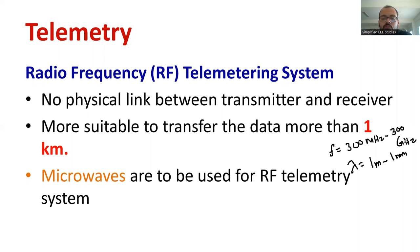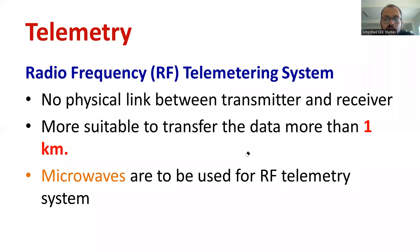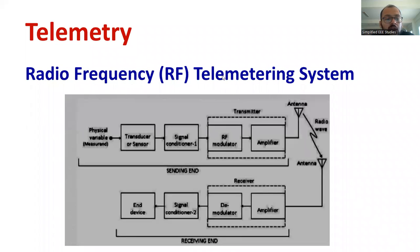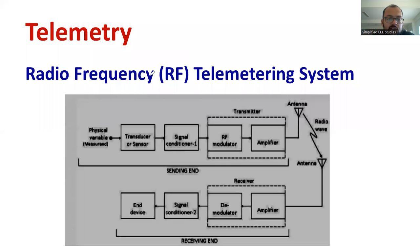Microwaves are commonly employed for this type of telemetry system. Let us look at a block diagram to understand how the information will be transmitted from the sending side to the receiving side through microwave. This block diagram will help you understand the RF telemetry system. As we can observe, it is very clear that we have the sending side, and our ultimate goal is to transfer the information from the sending side to the receiving side.